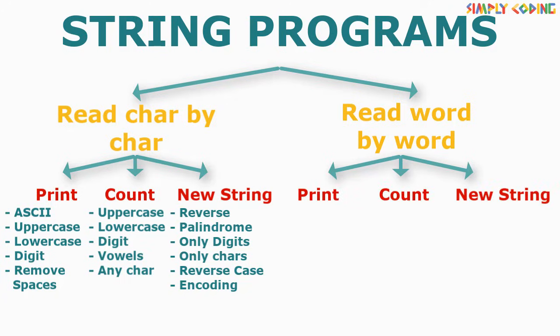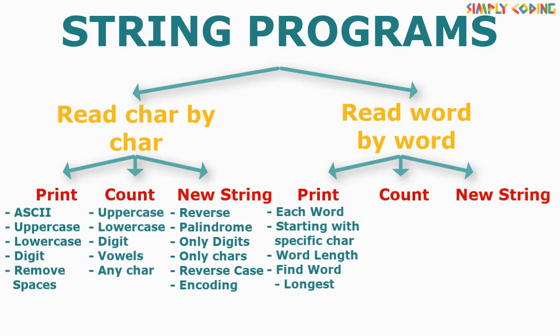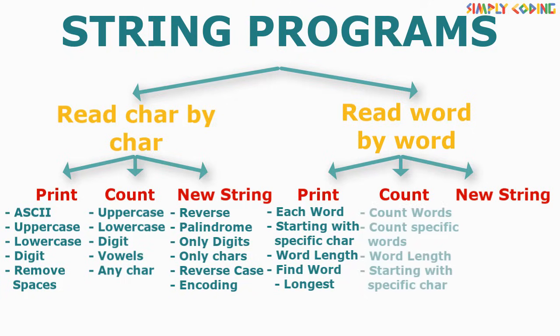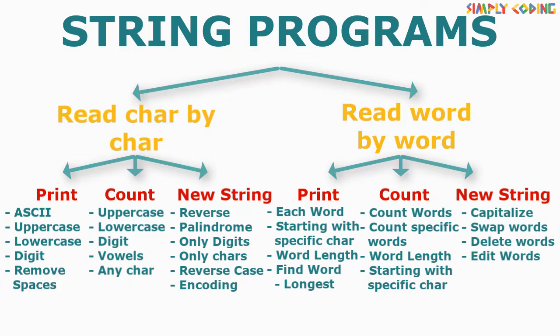The second type is where you have to find a count, like count the uppercase characters, lowercase characters, digits, vowels, or any specific character in the sentence. The third type is where you have to form a new string — for example, find the reverse of the string and check if it is a palindrome, extract only digits or alphabets, reverse the case, or encode the string like the Pig Latin program.